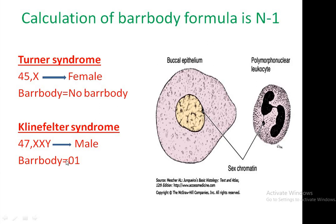Similarly, in Klinefelter syndrome the chromosome number is 47. This is an abnormal case where the sex chromosomes are XXY, which is a male condition. Here the Barr body number is 1. Using the n-1 formula, X chromosomes are 2, so n equals 2, and 2 minus 1 equals 1. Therefore, in Klinefelter syndrome the Barr body number is 1.